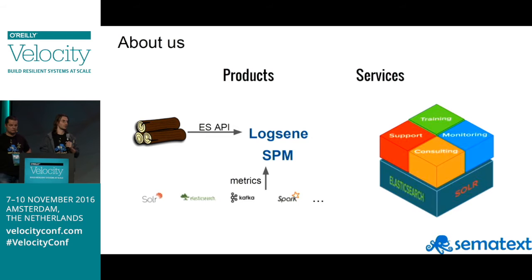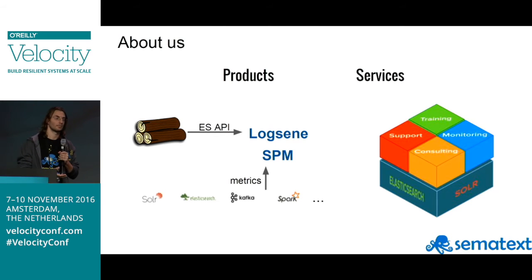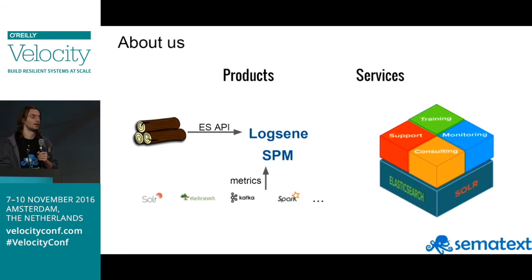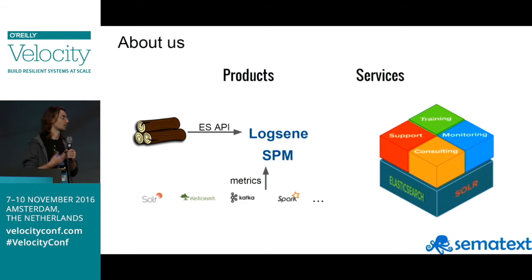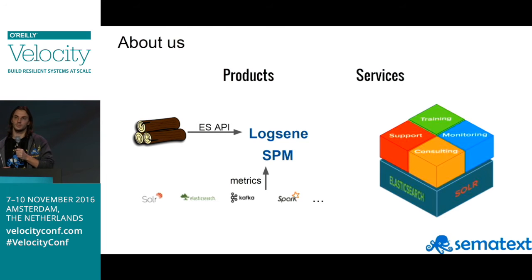We have a bunch of stuff to introduce you to about our background. On the consulting side, we do performance, production support, and trainings on Elasticsearch and Solr. On the engineering side, we work on our two main products: Logzene, a log aggregating service backed by Elasticsearch exposing the Elasticsearch API, and SPM for metrics — you can use it to monitor Elasticsearch and a bunch of other stuff. This talk is based on our experience running Logzene and SPM and also our work with clients doing similar things.